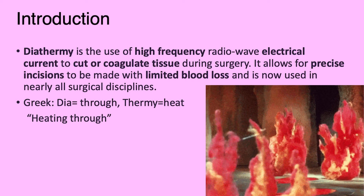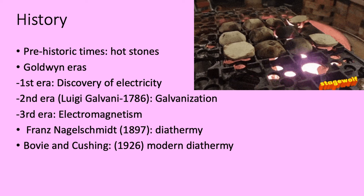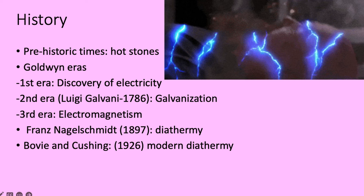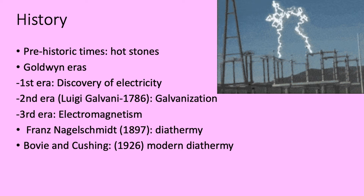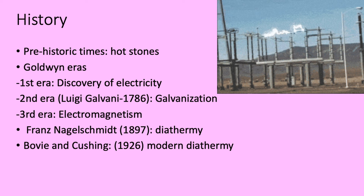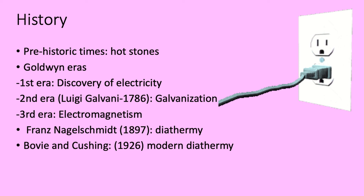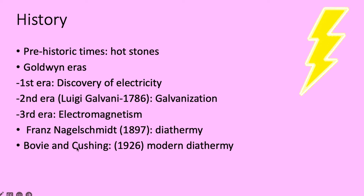The Greek meaning is 'through heat,' meaning heating through. In prehistoric times, hot stones were used. The first golden era was the discovery of electricity; the second was galvanization, discovered by Louis Galvani in 1786, which was the use of zinc to coat steel or iron. The third was electromagnetism. In 1897, Nagel Schmidt discovered diathermy, and modern diathermy was discovered by Bovie and Cushing in 1926.